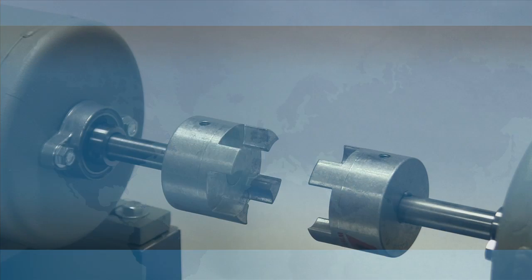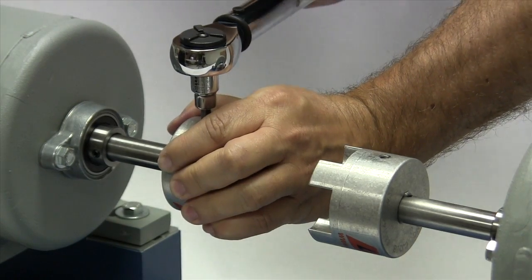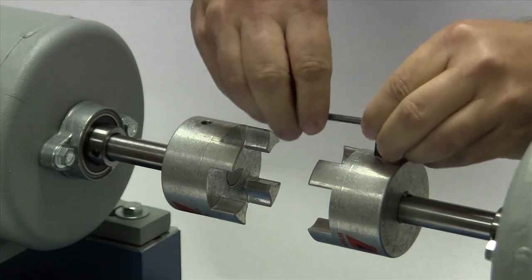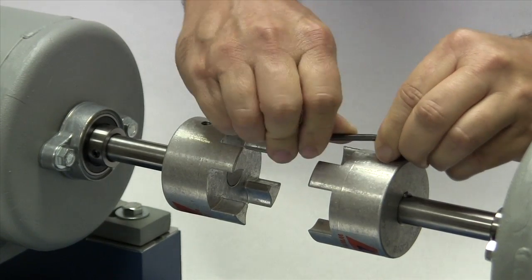We will tighten the set screw in one hub to the required torque and the second we will lightly tighten to allow for a minor adjustment after the equipment is moved into place.